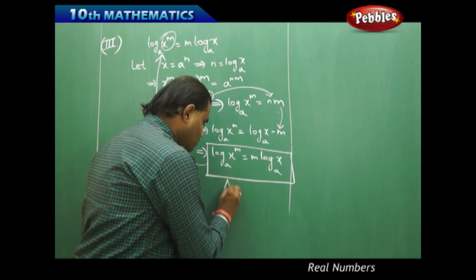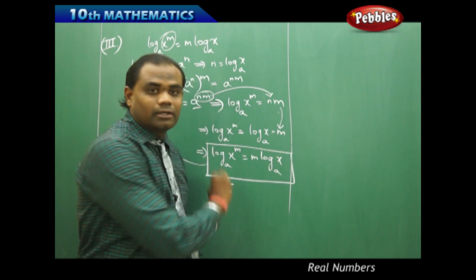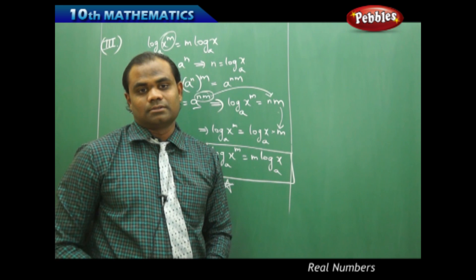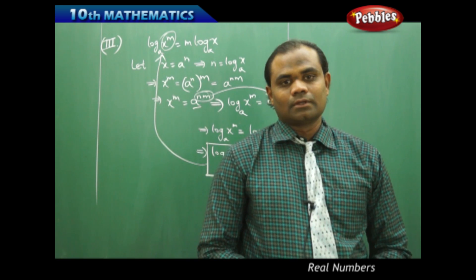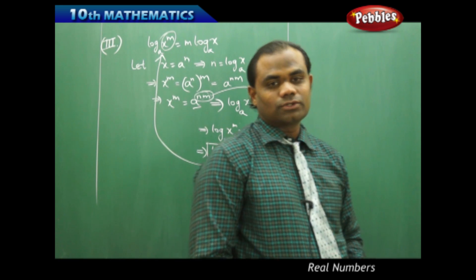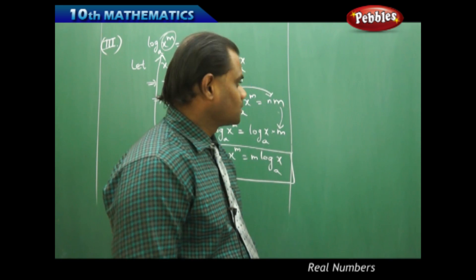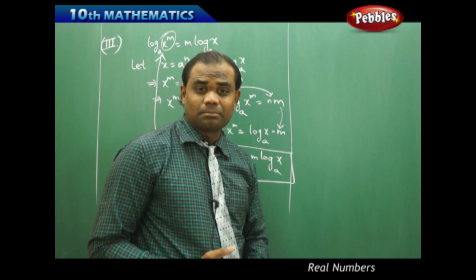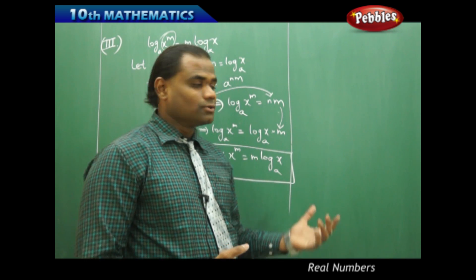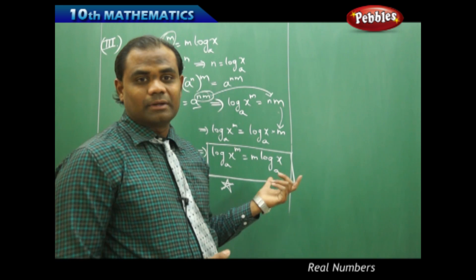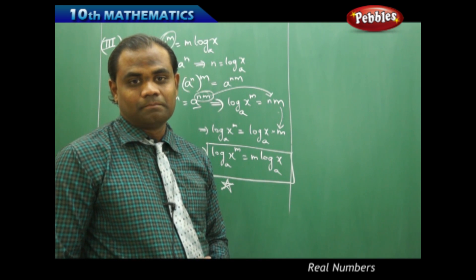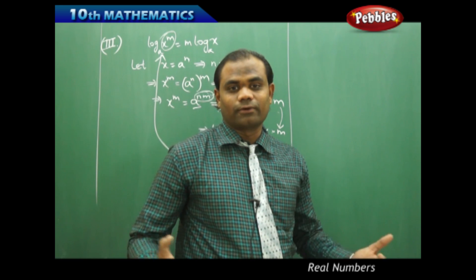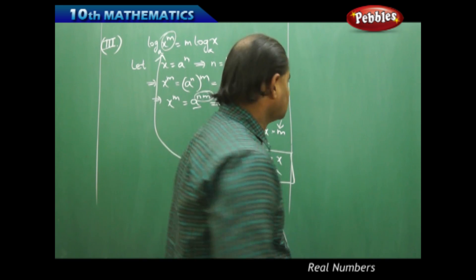I can conclude that the third law of logarithms states that log(x^m) to the base a equals m·log x to the base a. It is a very important formula in mathematics. Now I want to find some logarithmic problems using the different properties we have identified, especially the three laws of logarithms.